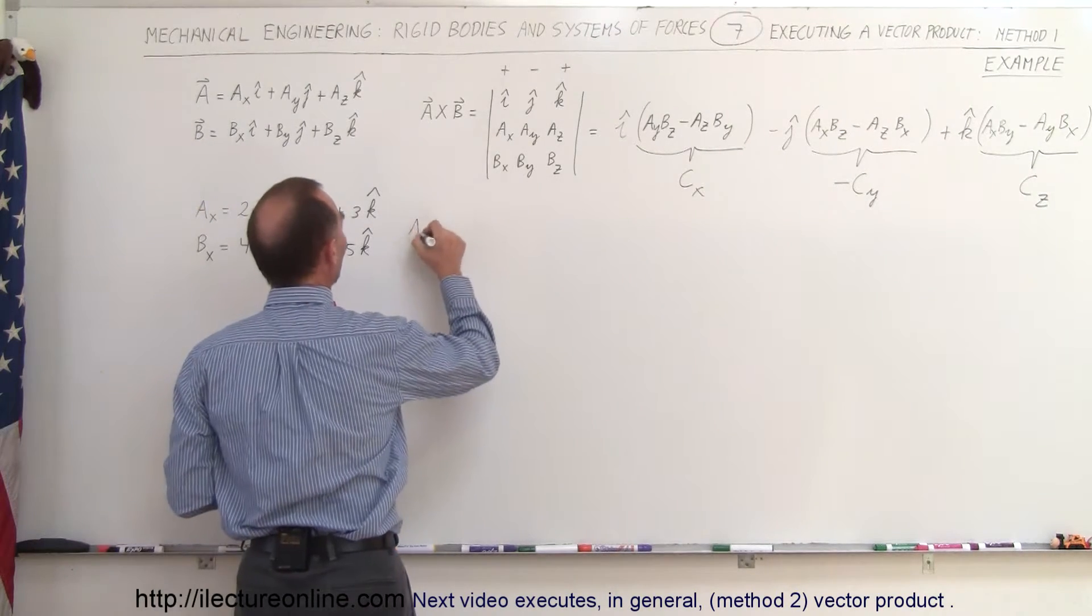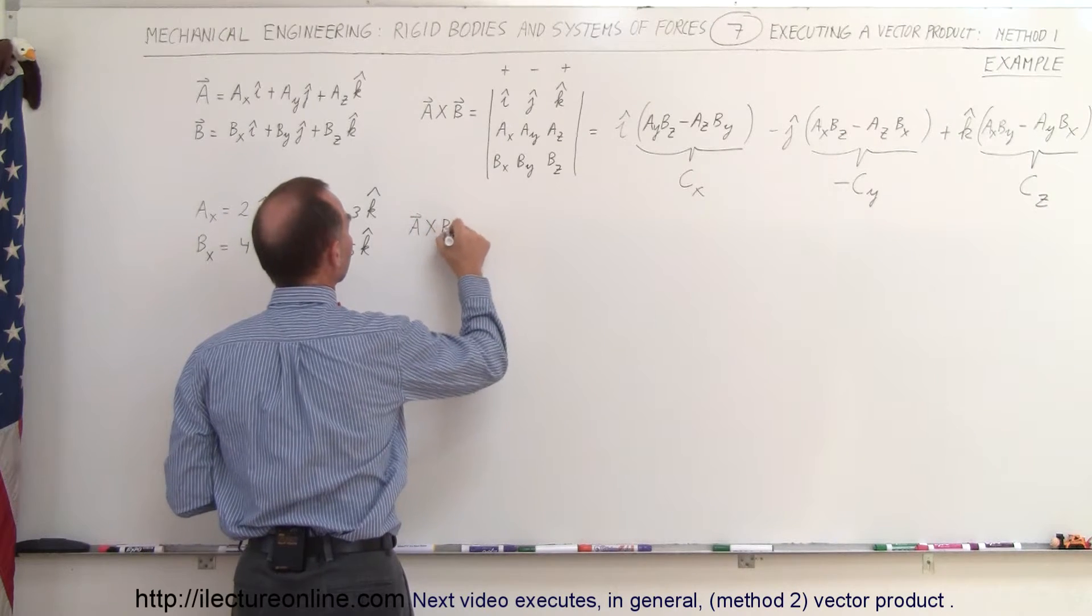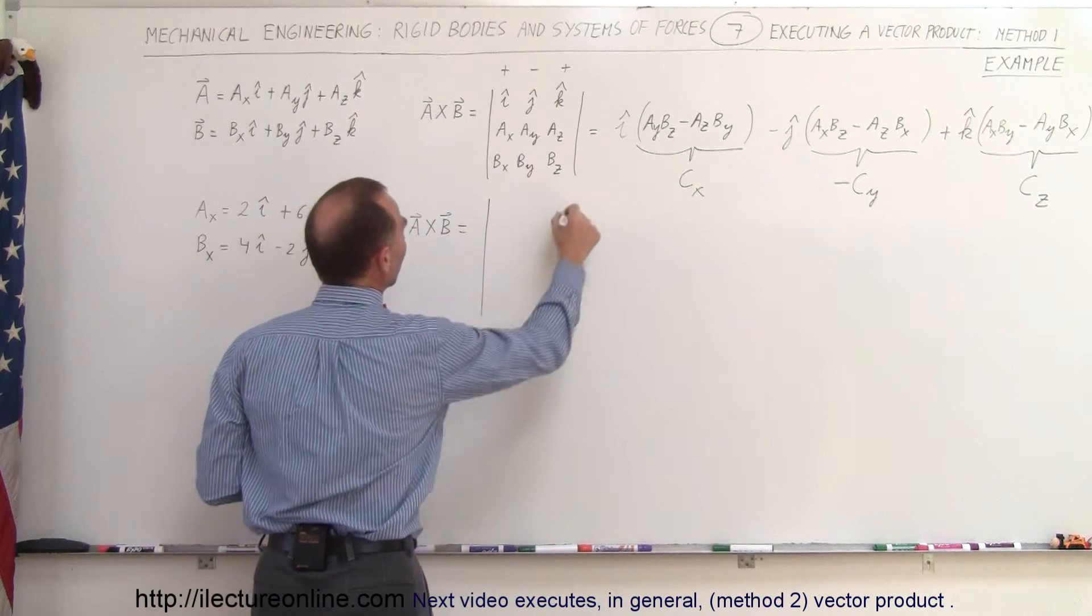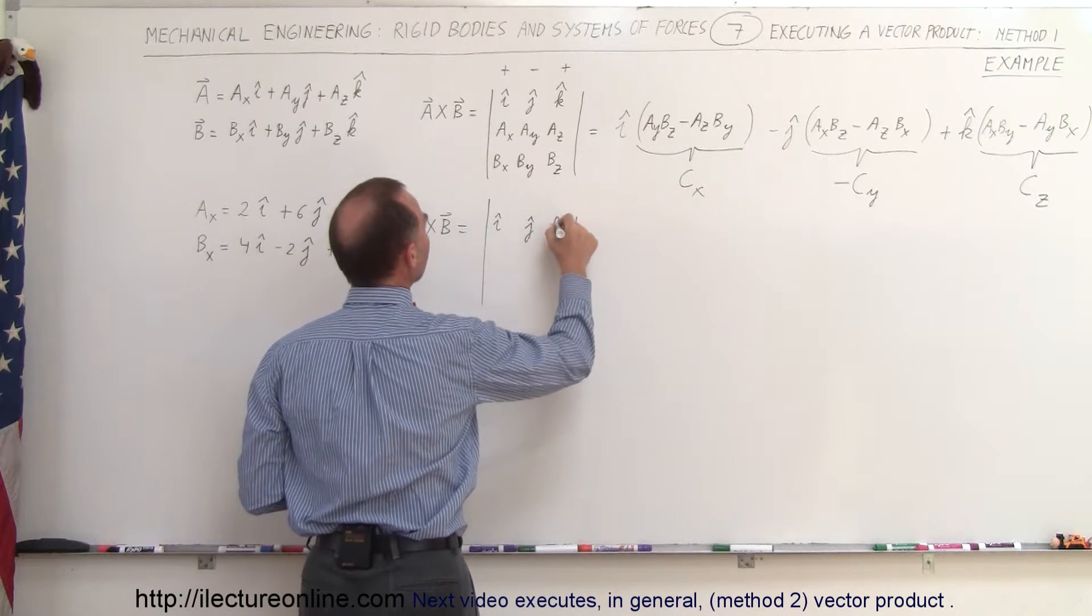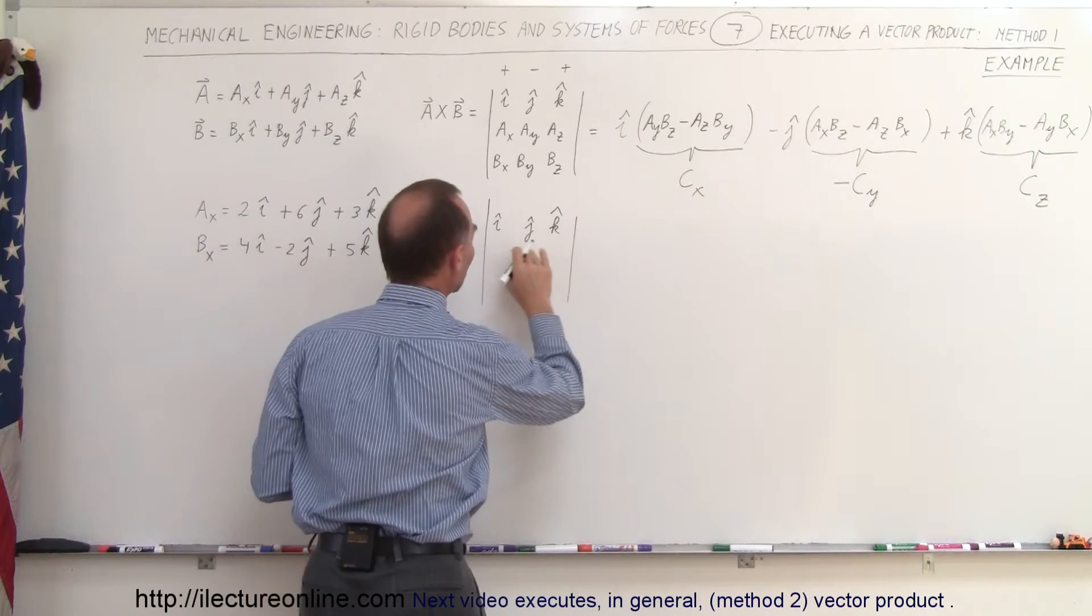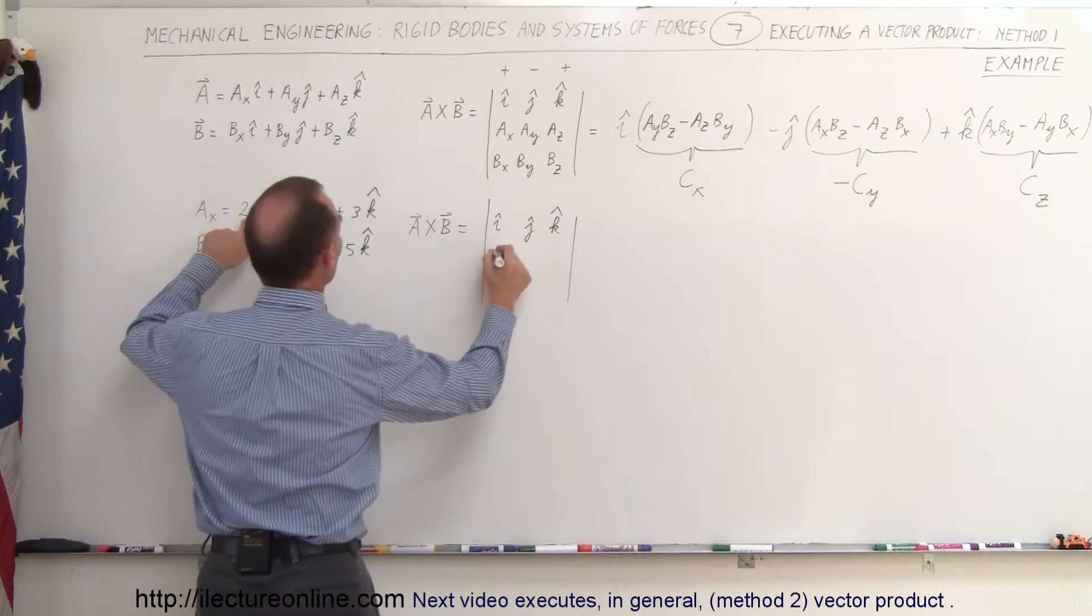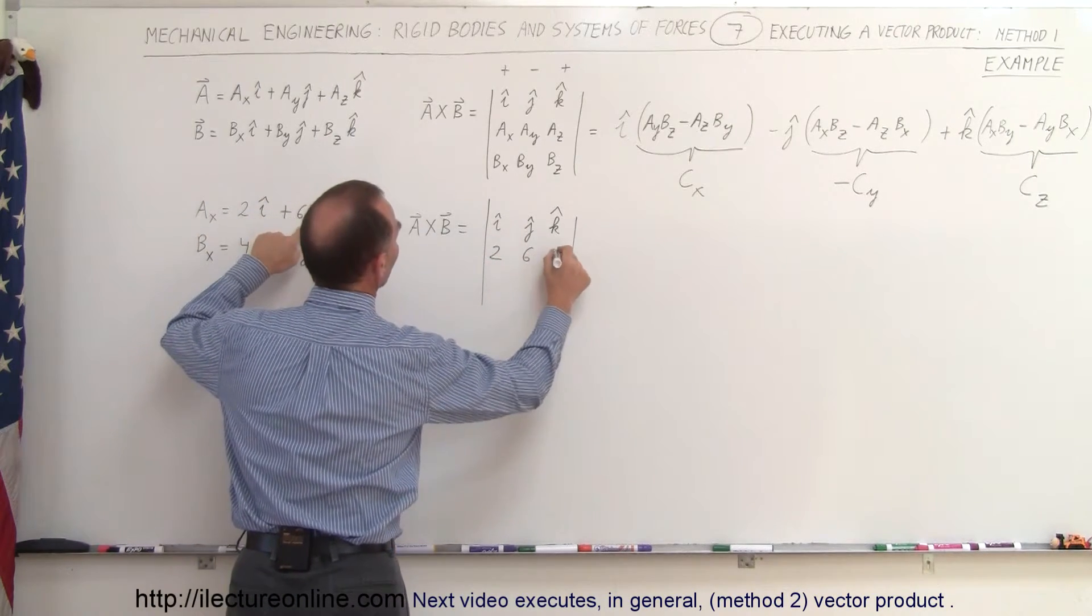So in this case we can say that A cross B is going to be equal to this matrix. So we have I, J, and K. And then here we plug in the X, Y, and Z component of A. So that would be 2, 6, and 3.